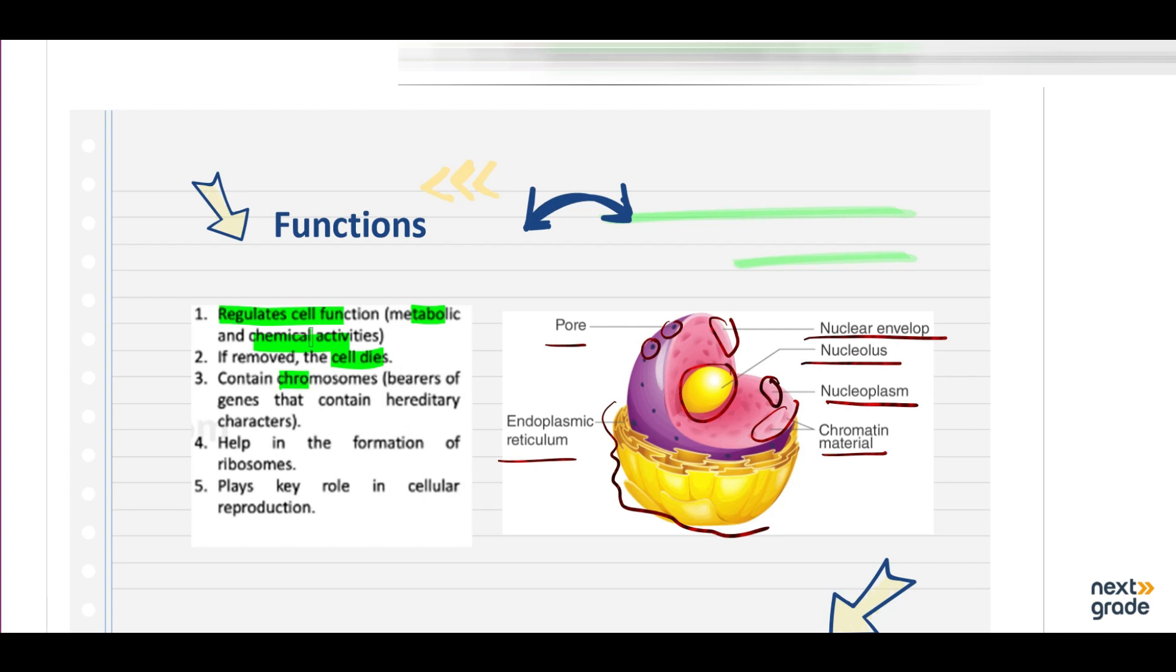It contains chromosomes that contain hereditary characteristics. It helps in the formation of ribosomes and it plays a key role in cellular reproduction. These are some of the functions that are being performed by the nucleus. Nucleus contains chromosomes which contain hereditary material which are passed from one generation to the other generation.